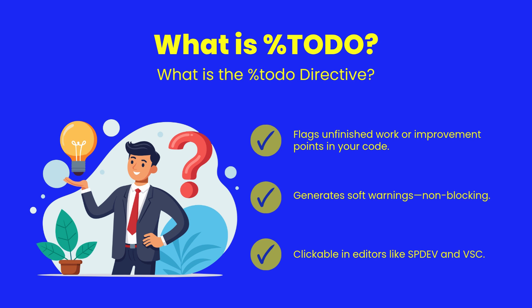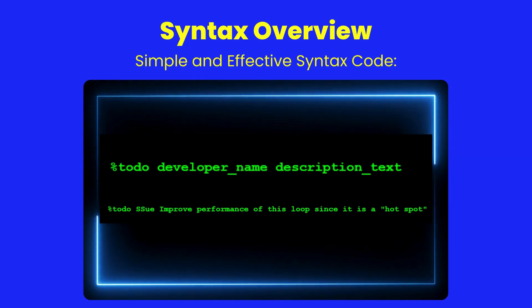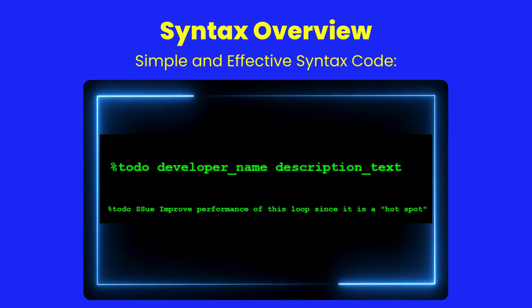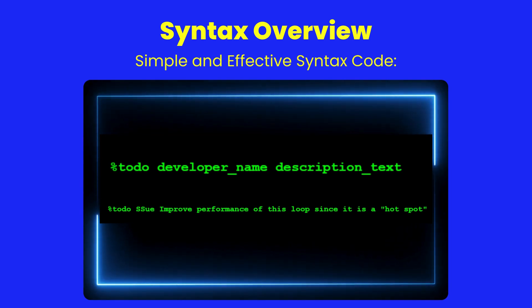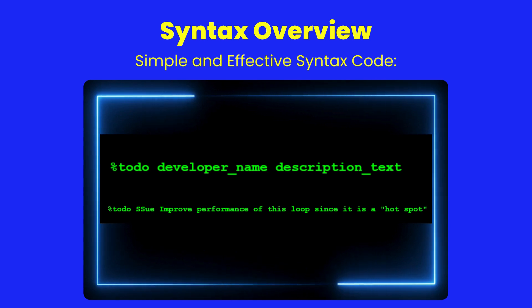Third, it's fully integrated into SheerPower development tools like SP Dev and Visual Studio Code. That means each percent TODO is clickable, instantly taking you to the right line of code for fast follow-up. Just type percent TODO followed by your name or initials and a short description. The directive is simple yet powerful.